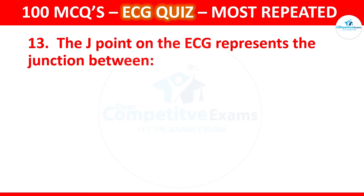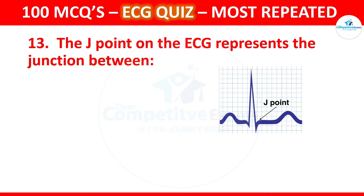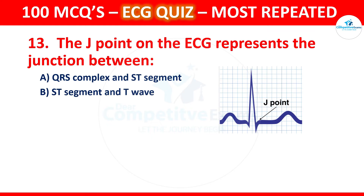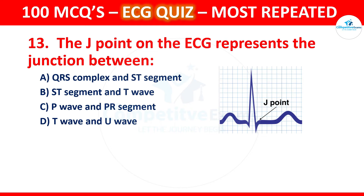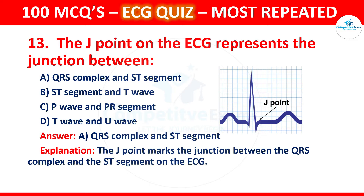Question 13: The J point on the ECG represents the junction between which two components? Options are QRS complex and ST segment, ST segment and T wave, P wave and PR segment, or T wave and U wave. The correct answer is QRS complex and ST segment. The J point marks the junction between the QRS complex and the ST segment on the ECG.